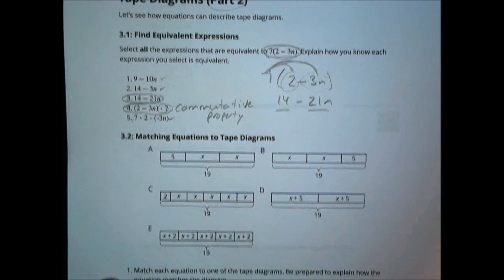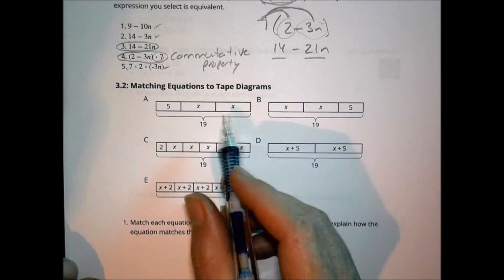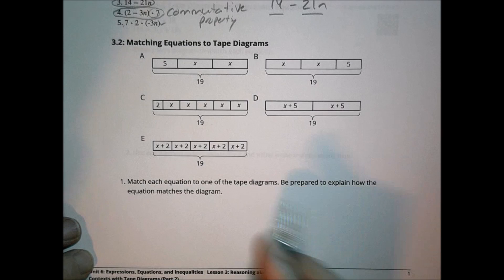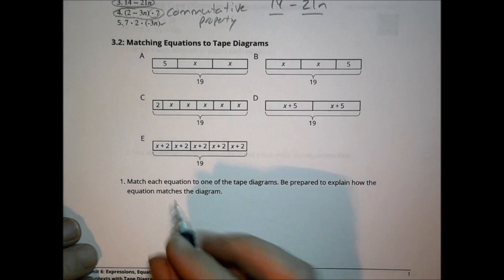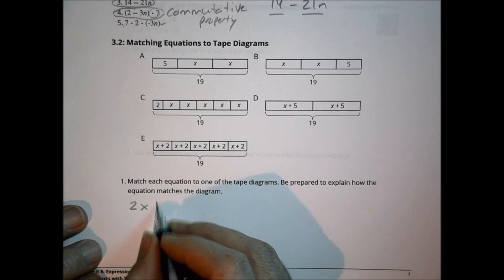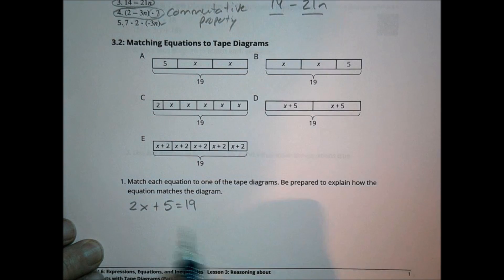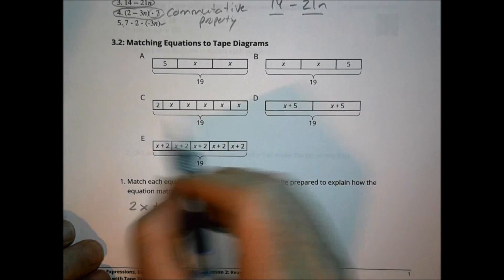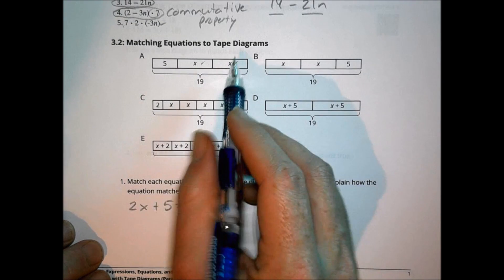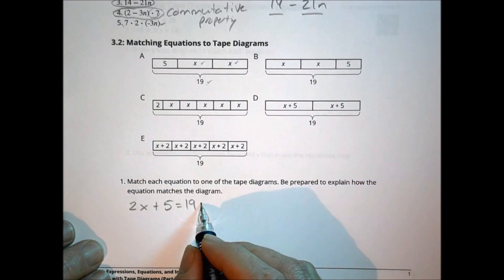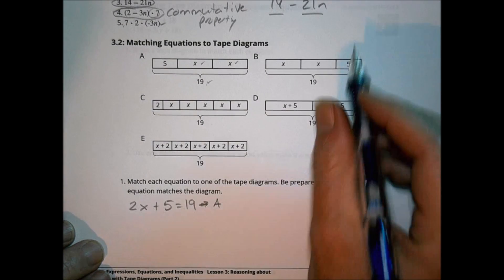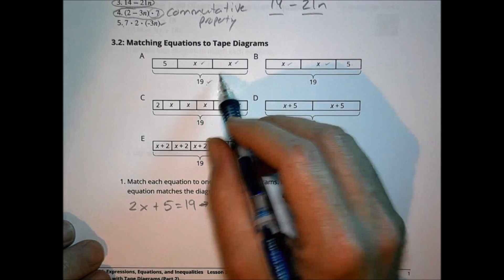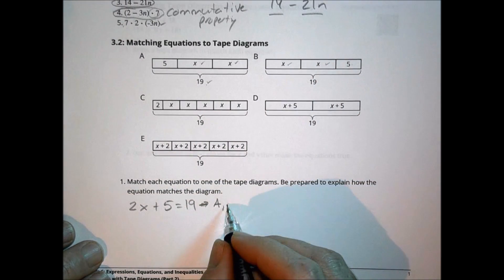Today's main activity looks at tape diagrams. We have five different tape diagrams and we want to match equations to each one. The first equation is 2x plus 5 equals 19. Looking at the diagrams, I see an x and an x — that's 2x — and a 5, summing to 19. That matches choice A. There's also a diagram with x, x, and 5 equaling 19, just in different order, so that also matches B.